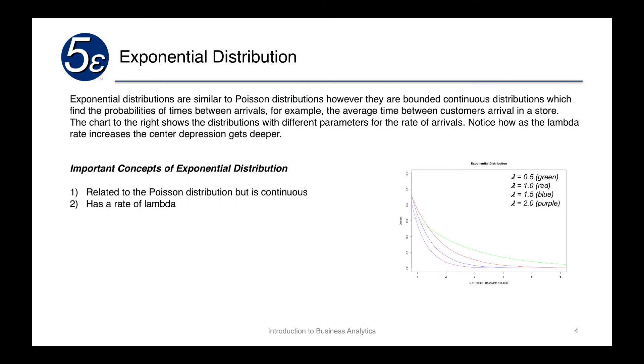Exponential distributions focus on the time of arrival between events — for example, the average time between customer arrivals in a store, or the average time between cars crossing a bridge.